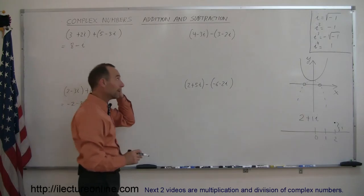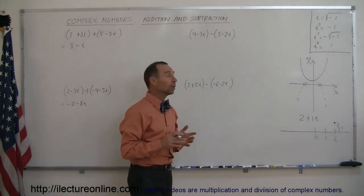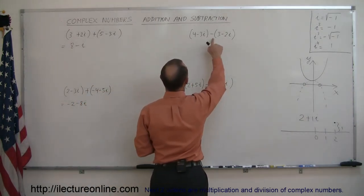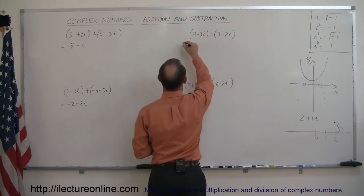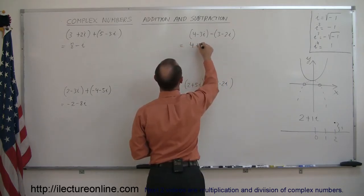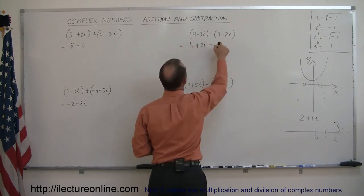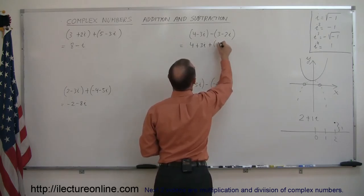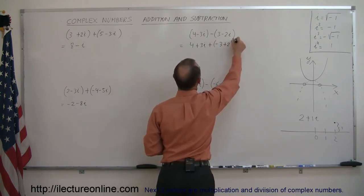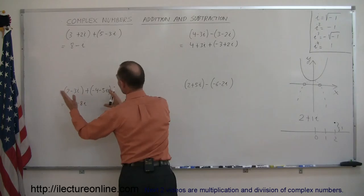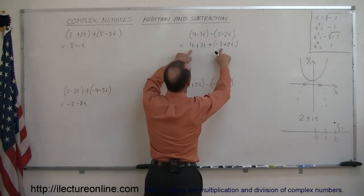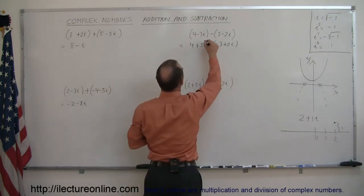When you subtract, you probably want to turn it into an addition. The easiest way to do that is to apply the negative sign first and write this as 4 plus 3i plus, and then change all the signs inside to get minus 3 plus 2i. Then you do exactly the same as before: add the real parts together and add the imaginary parts together.